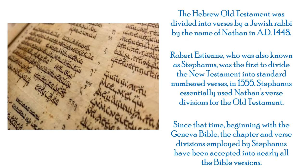The Hebrew Old Testament was divided into verses by a Jewish rabbi by the name of Nathan in AD 1448. Robert Estienne, also known as Stephanus, was the first to divide the New Testament into standard numbered verses.